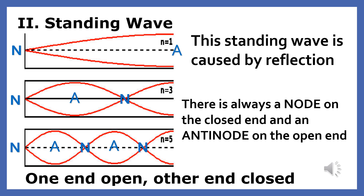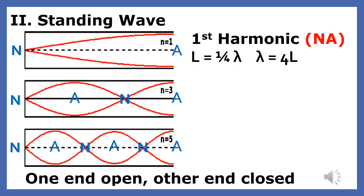The first standing wave is created by the fundamental or lowest frequency, which always has the largest wavelength. The first thing to learn is how to relate the standing wave distance L to the wavelength lambda. The distance between a node and an anti-node is one quarter of a wavelength. Since the fundamental frequency produces only a node and an anti-node, it is one quarter of a wavelength long, and the wavelength is 4L — four times the standing wave length.